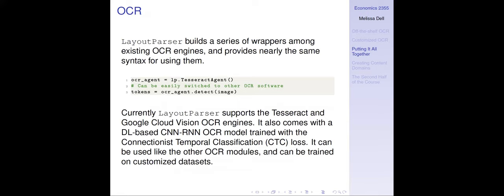In terms of OCR, Layout Parser builds a series of wrappers around existing OCR engines and provides nearly the same syntax for using them. You can set the OCR agent to Tesseract; right now it supports Tesseract and Google Cloud Vision, and potentially more engines in the future. It also comes with the model we trained on numbers — Japanese numbers — which is a CNN, RNN, and OCR model. You could use it off the shelf if your document looks like that, or take that code and train it on your own customized datasets to make your life easier than starting from scratch.